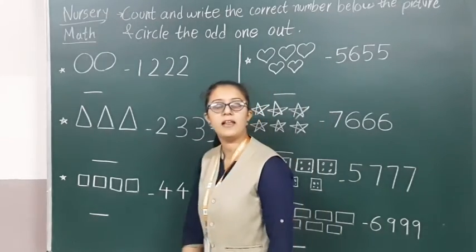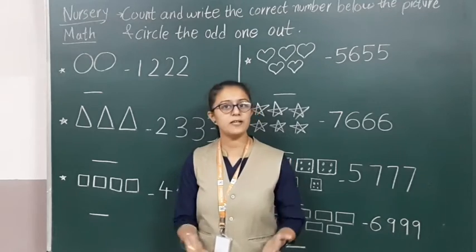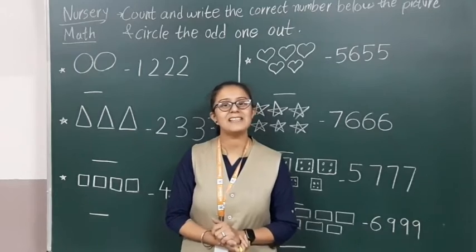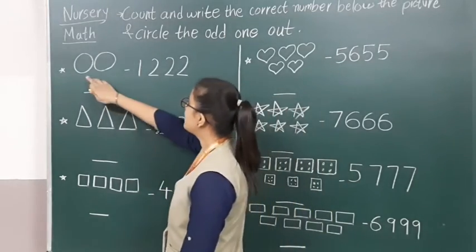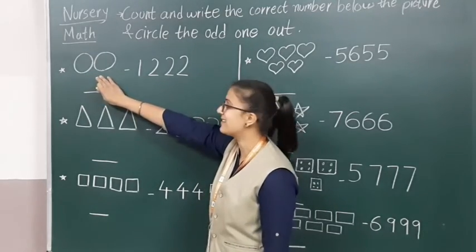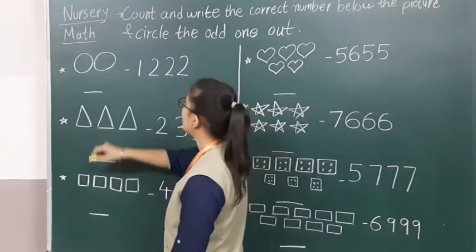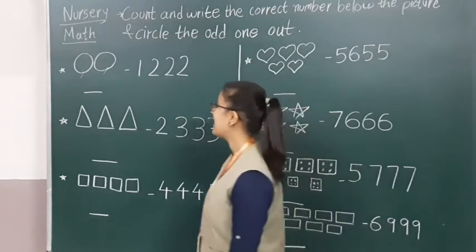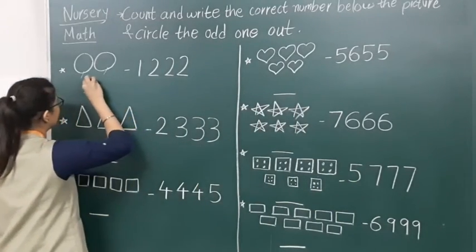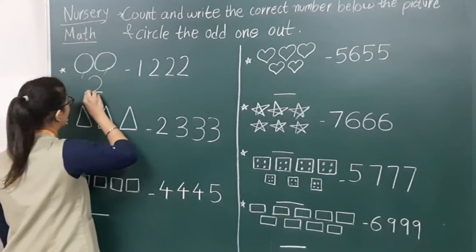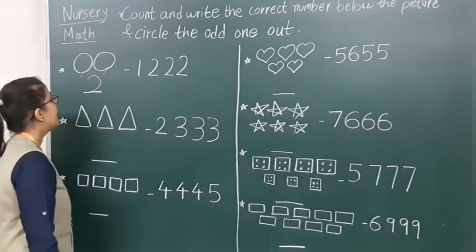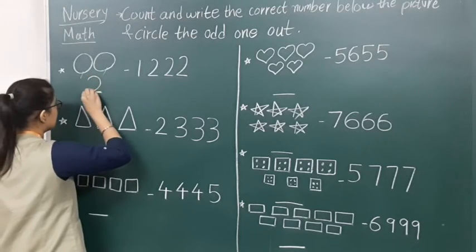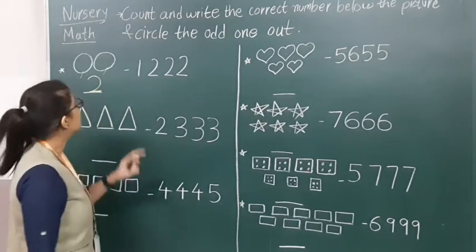Now you all are aware that we have learnt many numbers. So we will count first. Which shape is this? Circle, right? So there are how many circles? 1, 2 — two circles. So how to write number 2? One curve and then one sleeping line. Number 2.